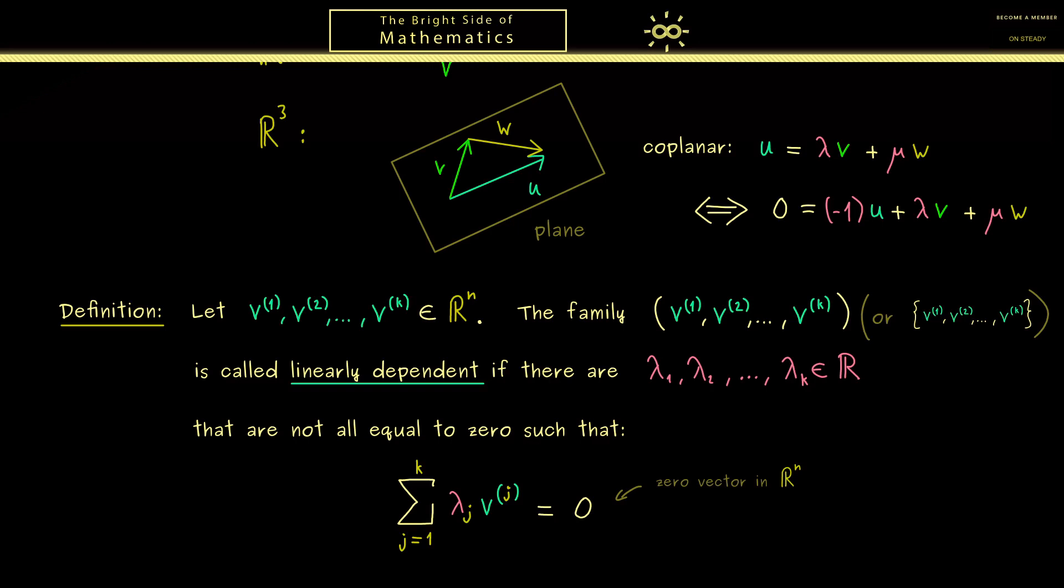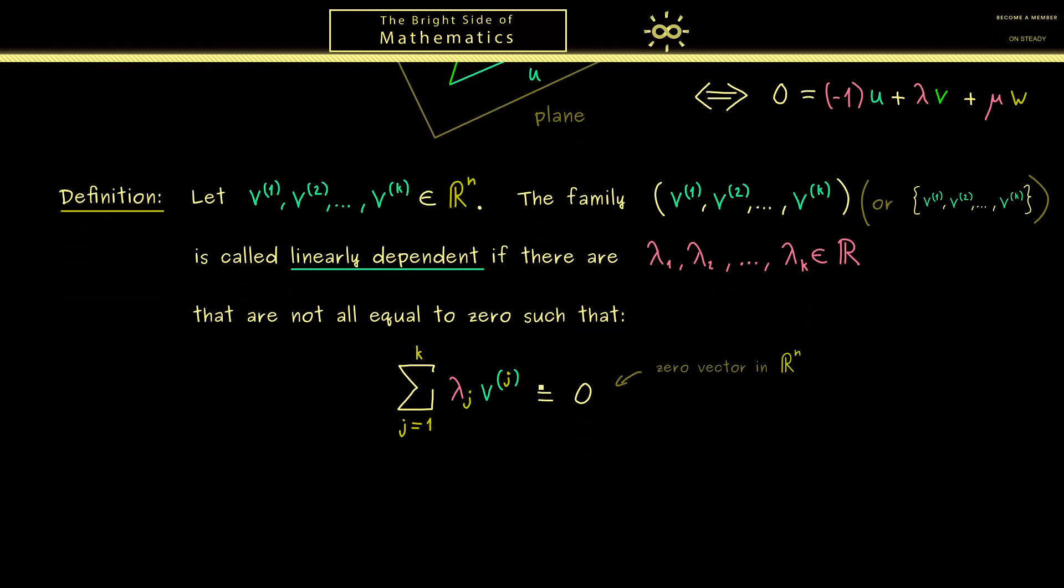Okay, now by having this definition, you might already know what it means when we talk about linearly independent vectors. Or more precisely, we should say that a family of vectors is linearly independent. Of course, it simply means that such a non-trivial linear combination for the zero vector is not possible.